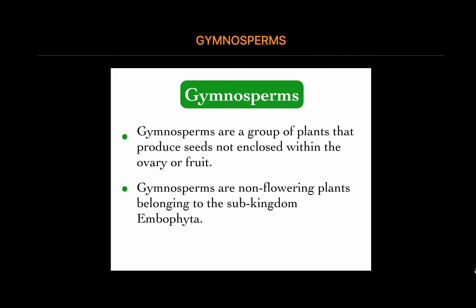These plants develop on the surface of scales or leaves, or at the end of stalks forming a cone-like structure. Gymnosperms are plants in which the ovules are not enclosed within the ovary wall, unlike the angiosperms. They remain exposed before and after fertilization, and before developing into a seed. The stem of gymnosperms can be branched or unbranched. The thick cuticle, needle-like leaves, and sunken stomata reduce the rate of water loss in these plants.